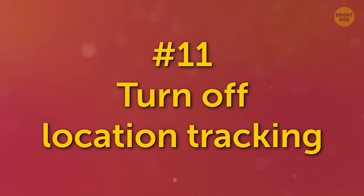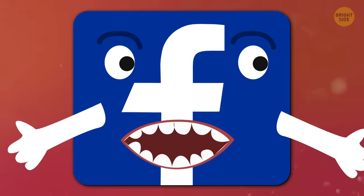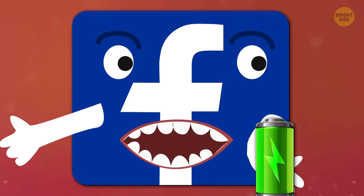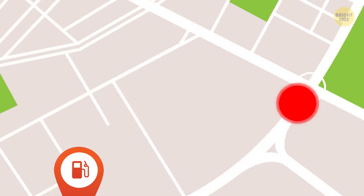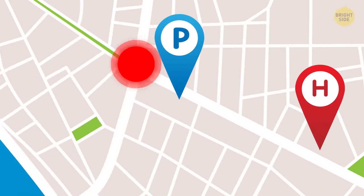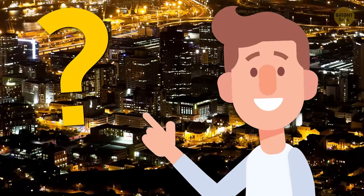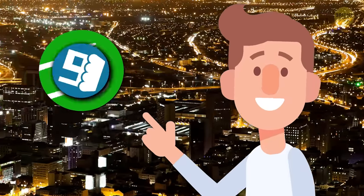Number 11. Turn off location tracking. Facebook isn't the only app that likes to know where you are. Google Maps isn't going to give very accurate directions if it doesn't know your location, but do you need to be tracked by every restaurant and store with its own app?